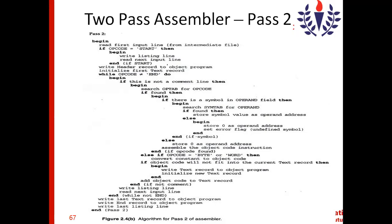After the header record, the text record has to be initialized — that is why it says 'initialize first text record.' It says 'first' because there might be multiple text records. While the opcode is not equal to END, the assembler processes each line. It searches the op table for the opcode, just as the op table was used in pass one, and the same thing is used in pass two.